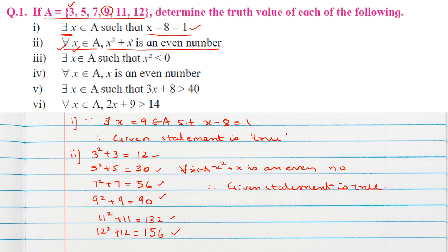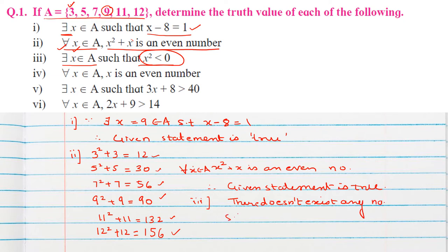Question 3: There exists x belonging to A such that x squared is less than 0. Since any number's square cannot be less than 0, there does not exist any number such that x squared is less than 0. Therefore, the given statement is false.